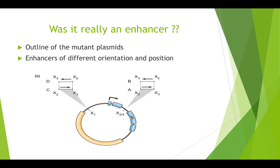The first experiments showed there was a sequence required for transcription. The upcoming data will show this sequence can be moved and flipped, a common feature of enhancers. Tonegawa's group removed the X2-X3 region containing the enhancer, then created four plasmids reinserting the X2-X3 fragment in different ways. Plasmids A and B reinserted the fragment back into the intron in the forward or backward orientation, respectively. Plasmids C and D inserted the fragment upstream of the core promoter at cutting site X1, in the forward or backward orientation, respectively.